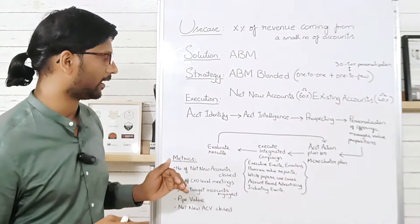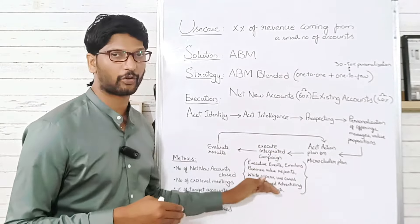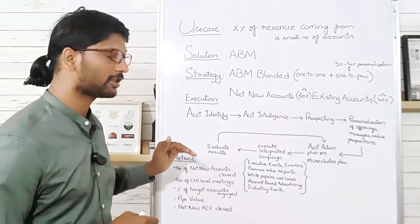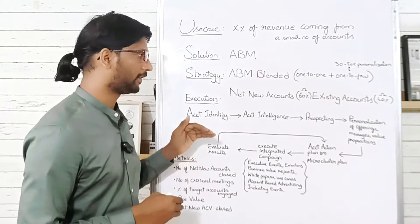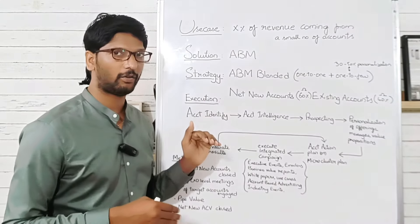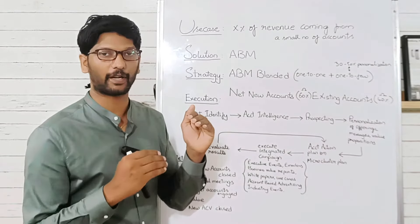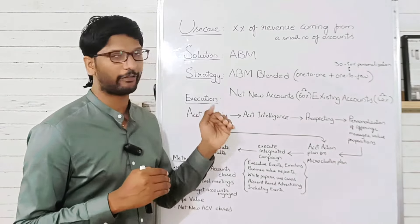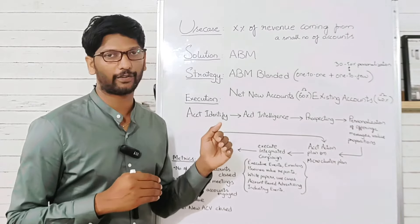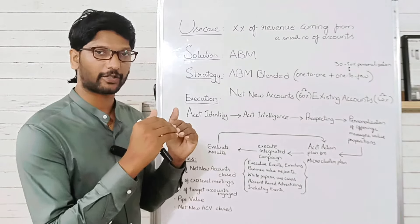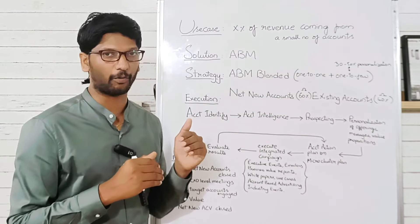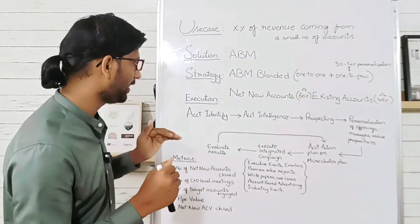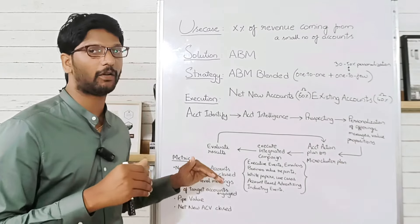Once you execute your integrated campaign, you will evaluate the results. Metrics depend on the channels you are using. Reports come in two levels: for strategic accounts, each and every account will have a separate account performance report; for one-to-few accounts, each micro cluster will have its own performance report.